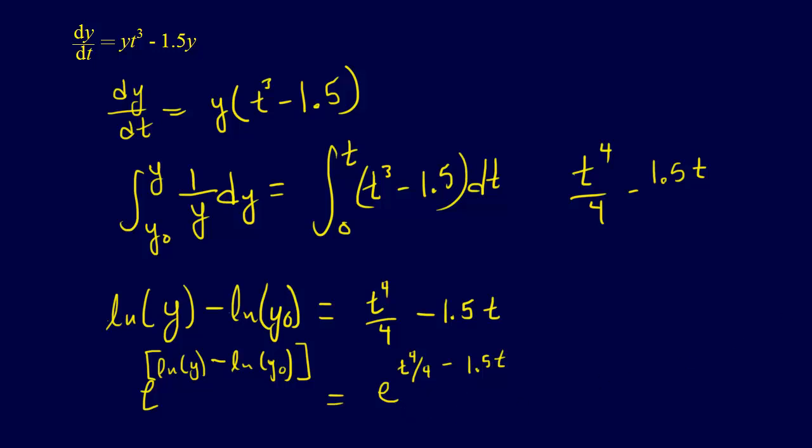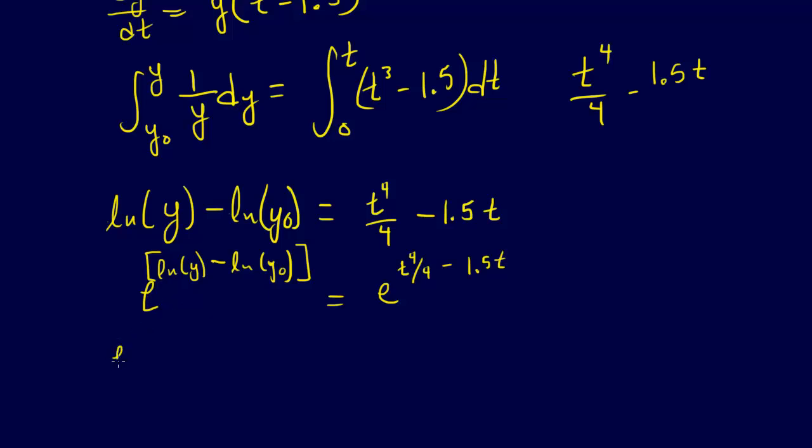And so this is going to be e to the ln of y over e to the ln of y naught, and this e and the ln will cancel each other out, so we're just going to have y over y naught equals e to the t to the fourth over 4 minus 1.5 t. And so we're almost there. Because we've got a 1.5 here and we've got a fraction here, I'm just going to make them all decimal, 0.25 t to the fourth minus 1.5 t.